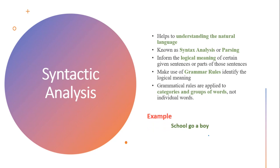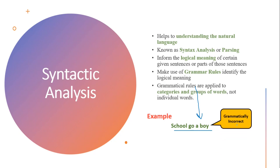Let's see another example. This sentence says 'school go boy.' Now we are checking, on the basis of grammar and logical reasoning, whether this is correct. This sentence doesn't make any sense because it has no clear structure. We can say it is grammatically incorrect because it doesn't represent a valid structure, and it doesn't give any logical sense either. So logically this sentence is not meaningful, and we can disqualify it as part of our syntactic analysis.